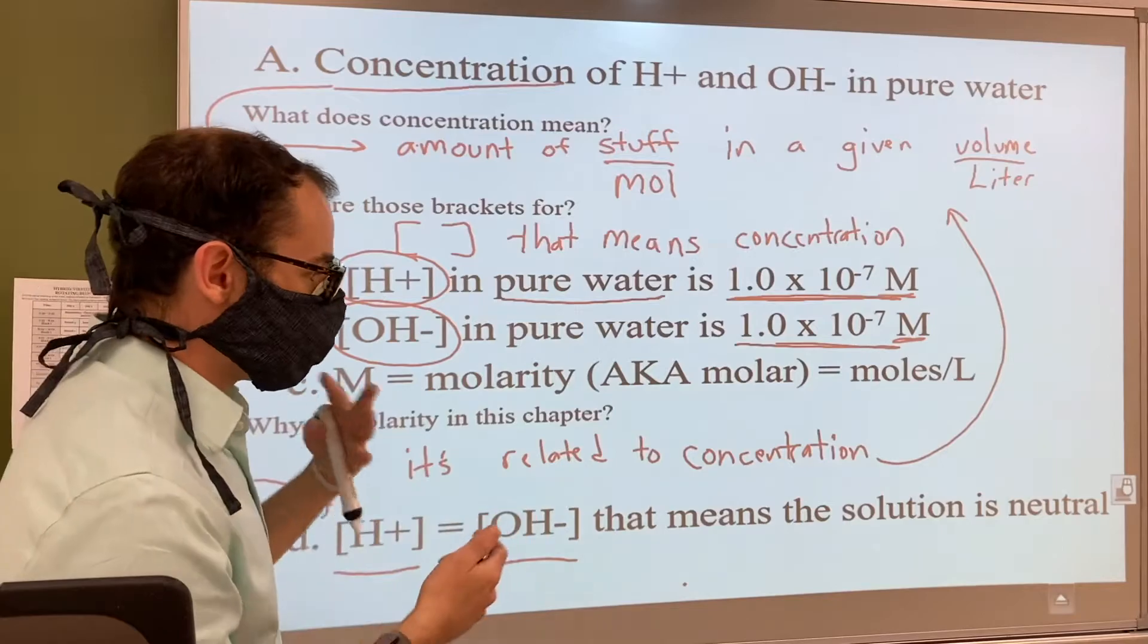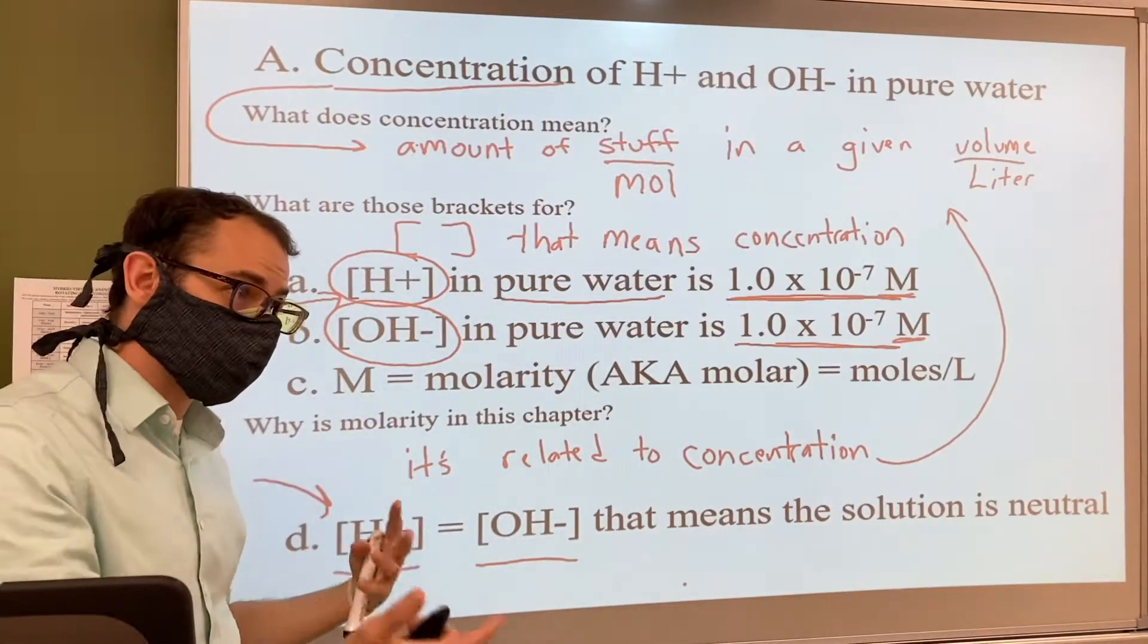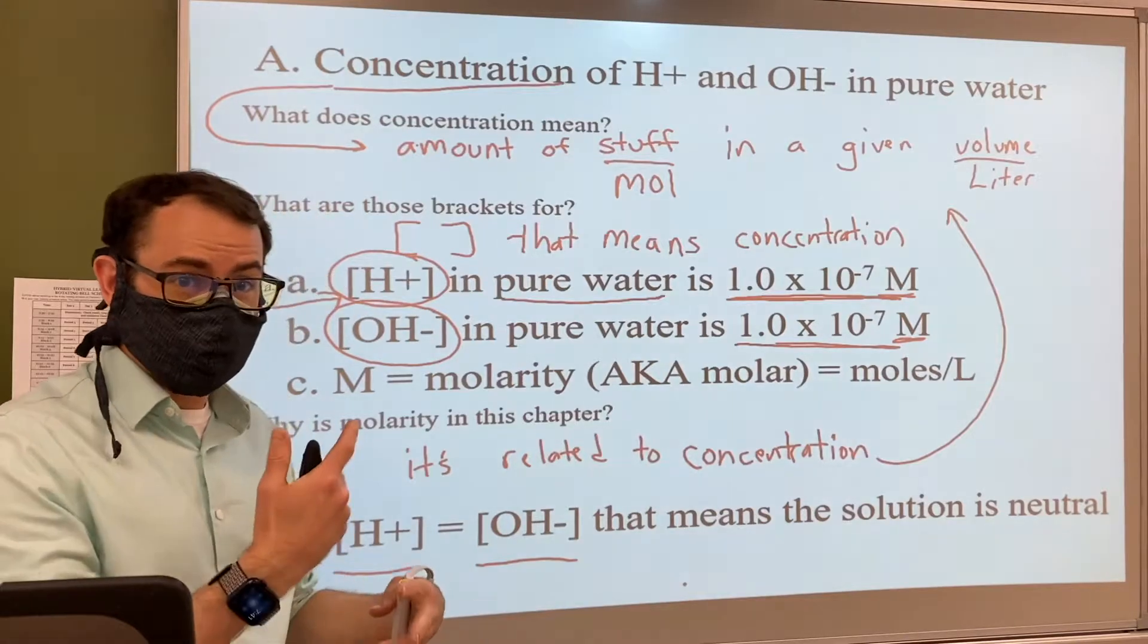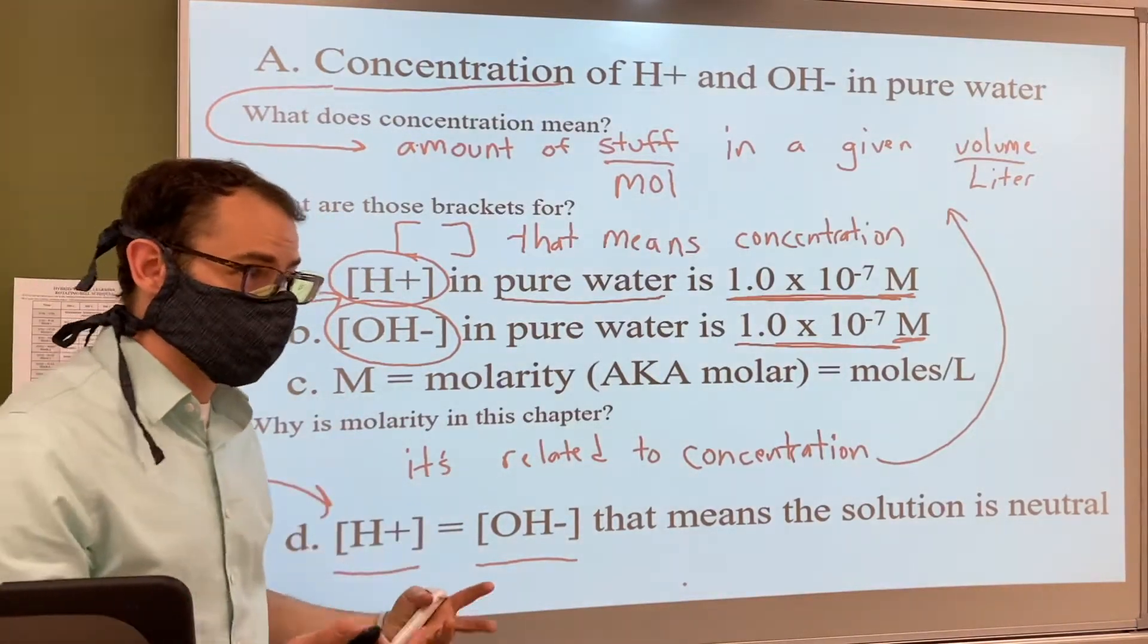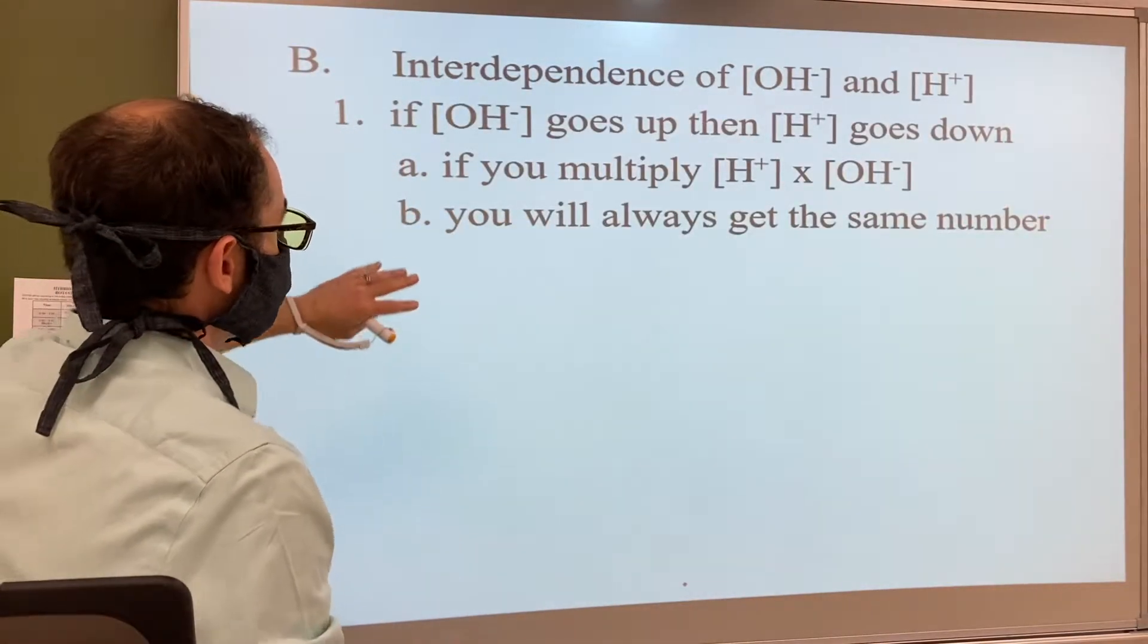Today what we're going to do is move on from that and say, well what happens when they're not neutral? We can kind of guess from previous chapters that if we have more of one it'll be more acidic and if we have more of the other it'll be basic.